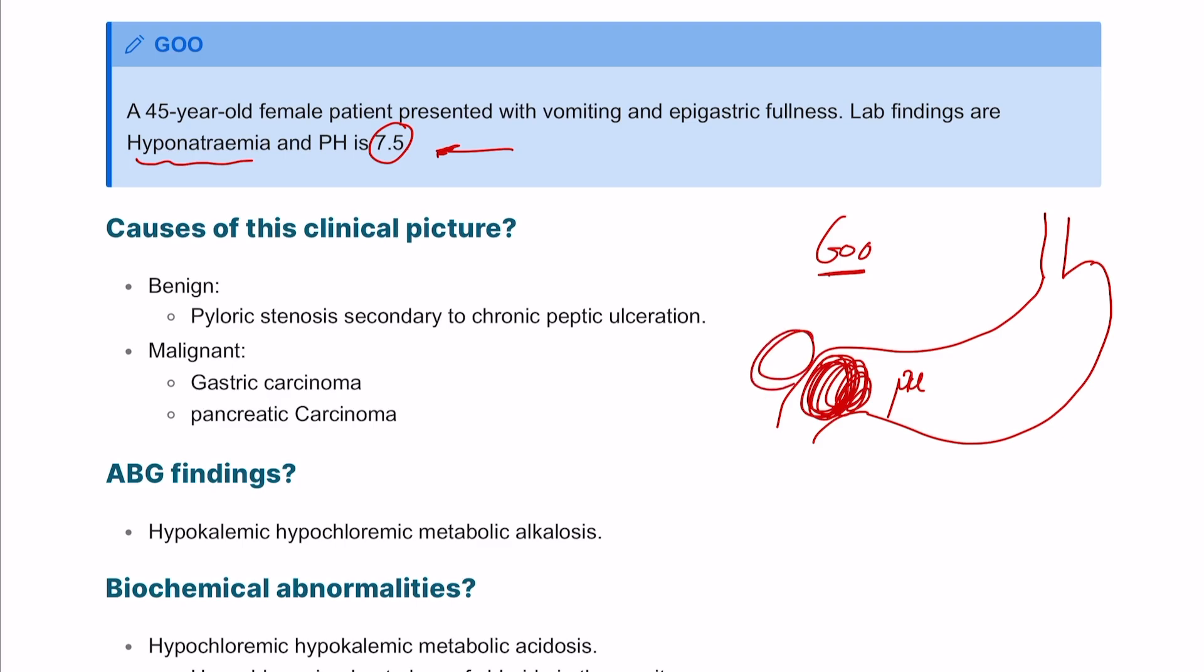However, it can be due to anything else, whether it's a tumor from the outside or maybe even a pseudocyst in the pancreas. We have a 45-year-old female patient presented with vomiting and epigastric fullness, which sounds typical for gastric outlet obstruction.